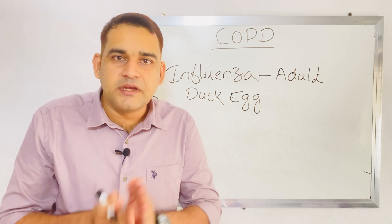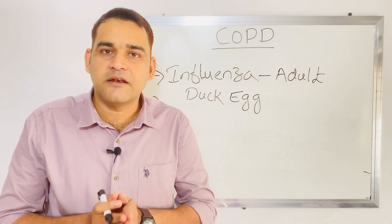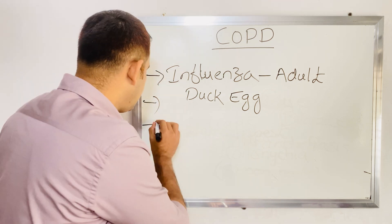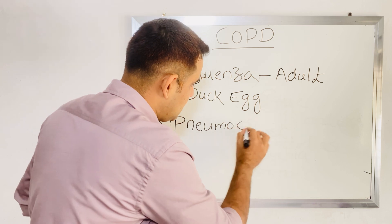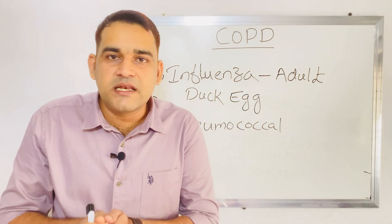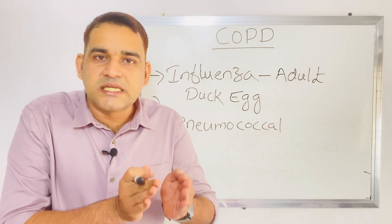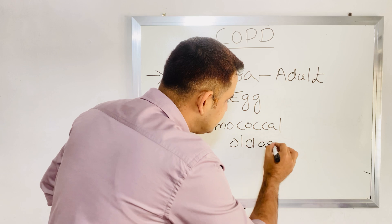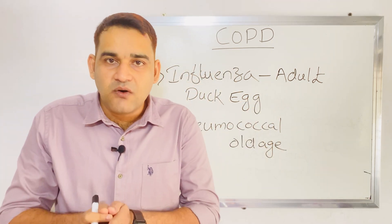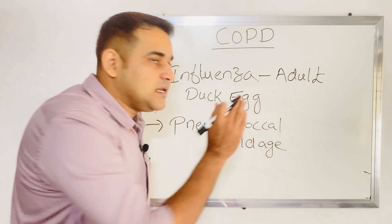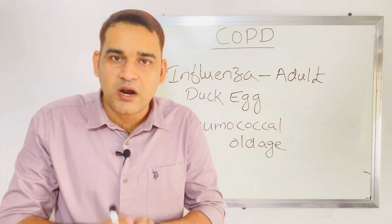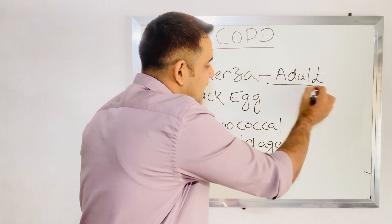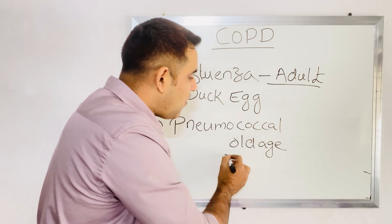For age above 65 with recurrent respiratory tract infection, you have to give pneumococcal vaccine instead. Pneumococcal vaccine is given for age 65 or above and is called the old age vaccine. Influenza vaccine is the adult vaccine; pneumococcal vaccine is the old age vaccine.